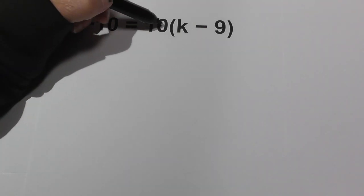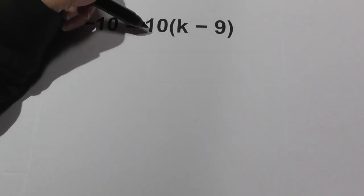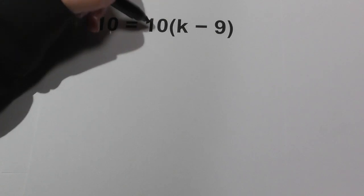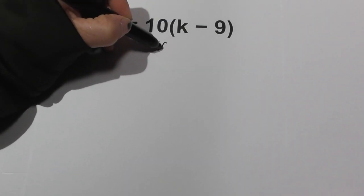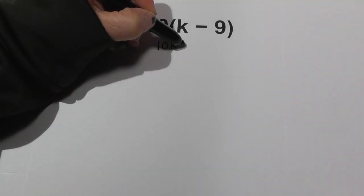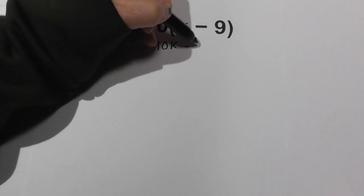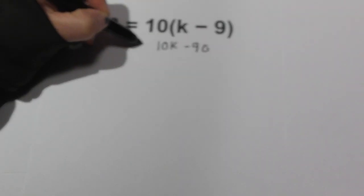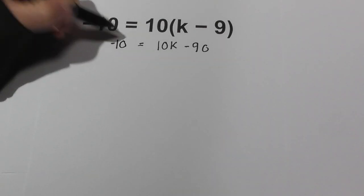The first thing we're going to do is the parentheses. Remember PEMDAS, so we're going to distribute the 10. 10 times k is 10k, and 10 times negative 9 is negative 90, equals negative 10.